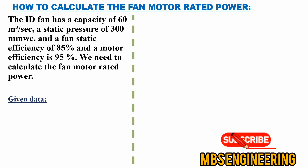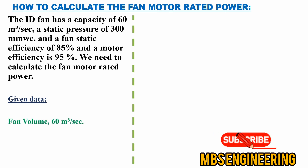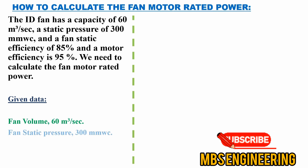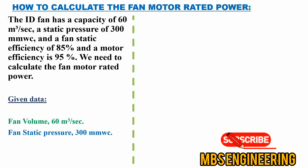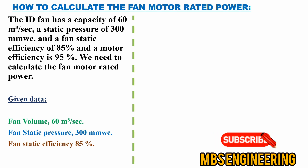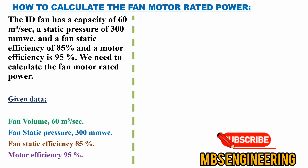Given data: the first parameter is the fan volume, which is 60 meter cubes per second. The second parameter is the fan static pressure, which is 300 millimeters of the water column. The third parameter is the fan static efficiency, which is 85%. The fourth parameter is the motor efficiency, which is 95%.